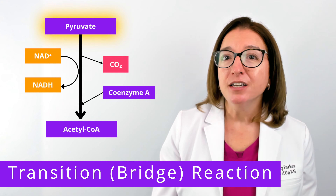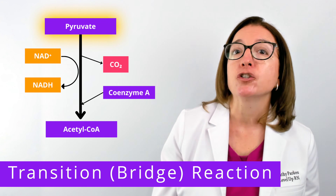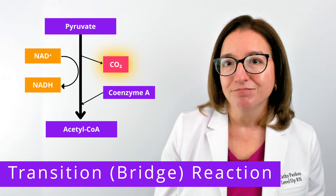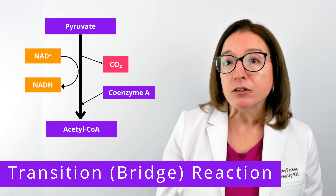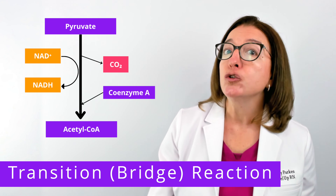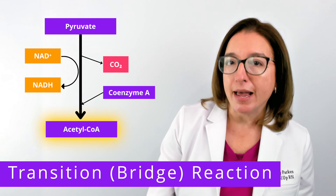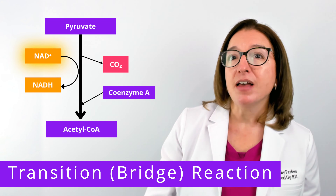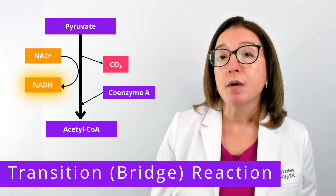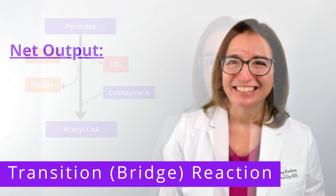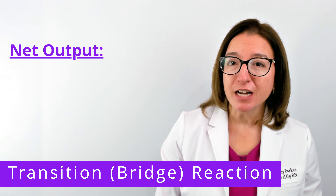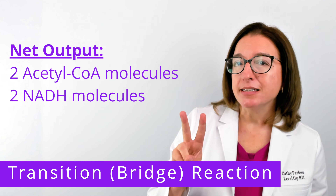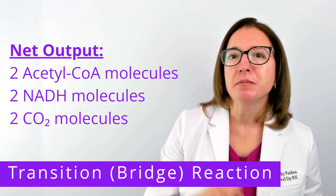During this reaction, the carboxyl group is removed from each of the pyruvate molecules, which releases carbon dioxide. Then the remaining two-carbon acetyl group is attached to coenzyme A, forming acetyl-CoA. Also during this process, the two molecules of NAD+ are reduced to two molecules of NADH. So the net output from the transition reaction is two acetyl-CoA molecules, two NADH molecules, and two carbon dioxide molecules.